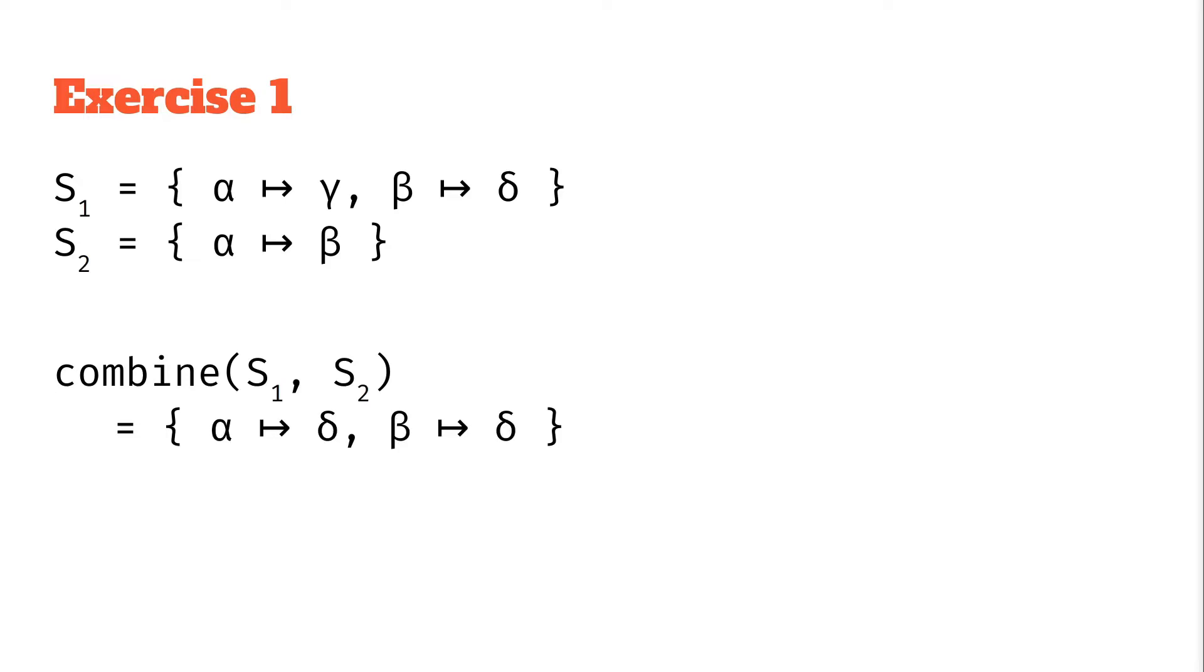Let's have a look at another exercise to really drive this home. We have two different substitutions. We've got the first one s1 alpha to gamma and beta to delta. And s2 alpha to beta and beta to alpha. So actually that s2 is a bit weird because it almost swaps alpha and betas. So what is the result of combining substitutions s1 and s2? Remember that definition. We're looking for the substitution that's equivalent to first applying s2 and then applying s1.